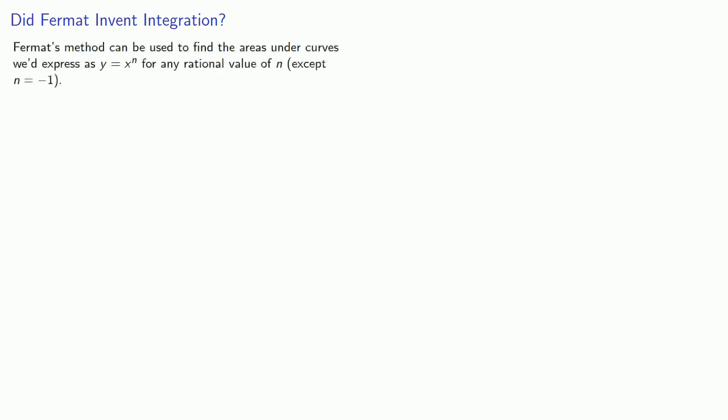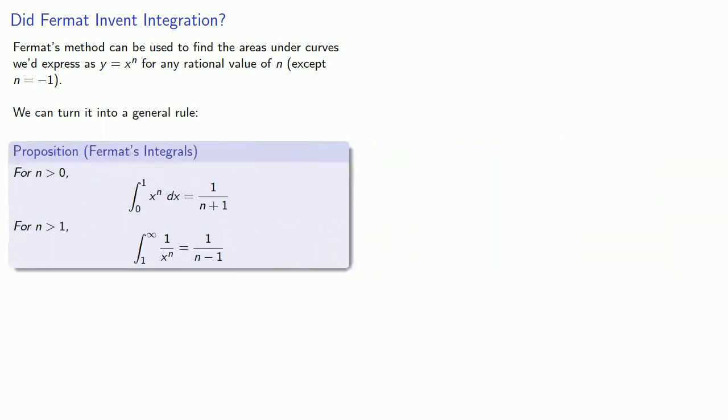Fermat's method can be used to find the areas under curves we'd express as y equals x to the n for any rational value of n, except for n equals minus 1. And in fact, we can turn Fermat's work into a general rule. The integral from 0 to 1 of x to the n, as long as n is greater than 0, 1 over n plus 1. Meanwhile, if n is greater than 1, the integral from 1 to infinity of 1 over x to the n is 1 over n minus 1. And so we might ask the question, did Fermat invent calculus?